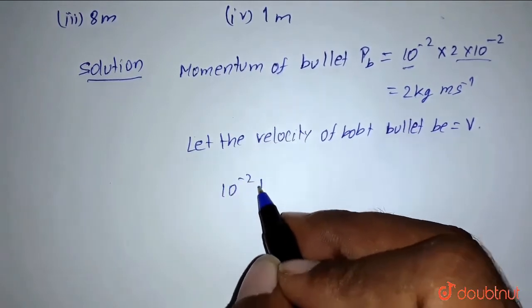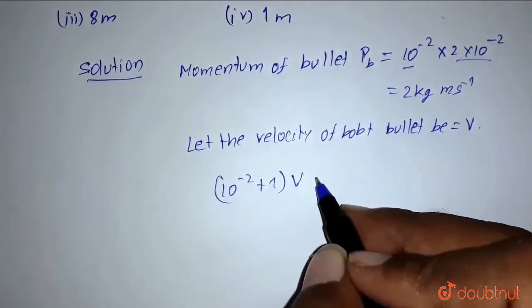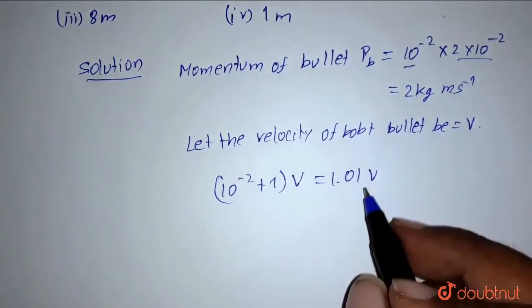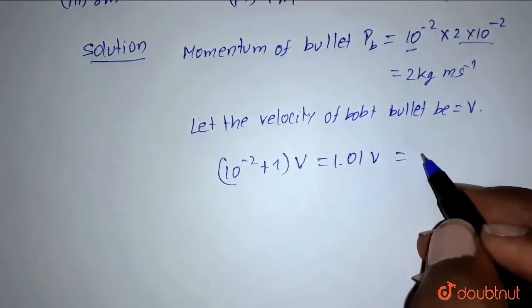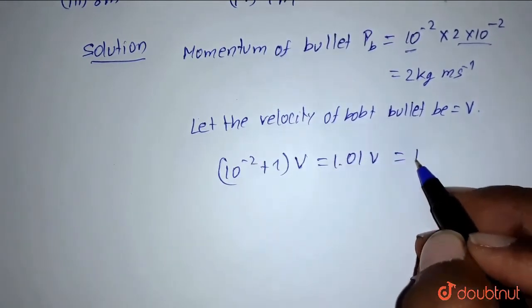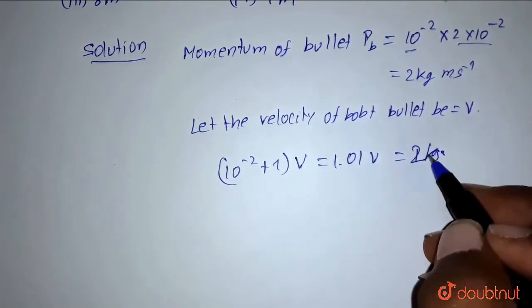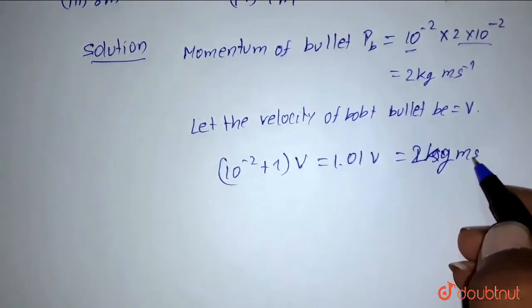(10^-2 + 1) × V = 1.01V, which equals 2 kilogram meter per second.